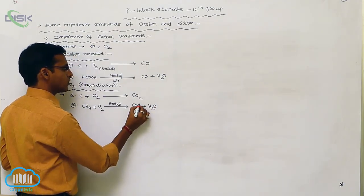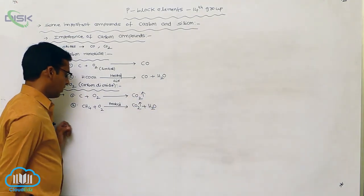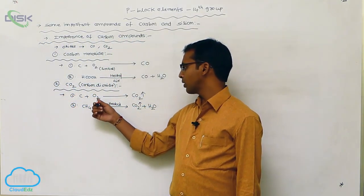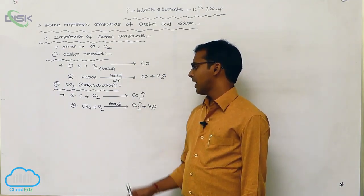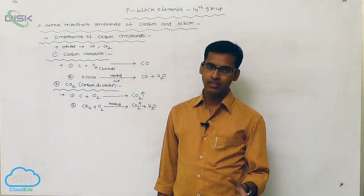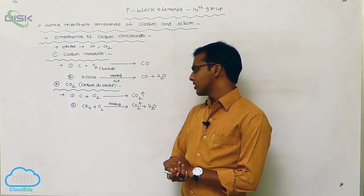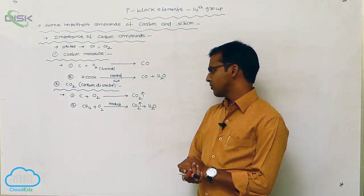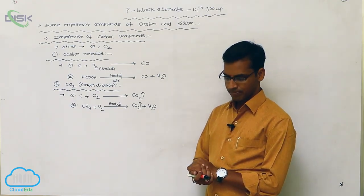So the preparation of carbon dioxide: carbon interacts with a greater amount of oxygen to give carbon dioxide, or hydrocarbons like methane undergo combustion in the presence of oxygen under thermal conditions to produce carbon dioxide.